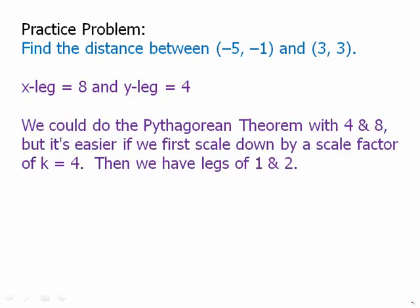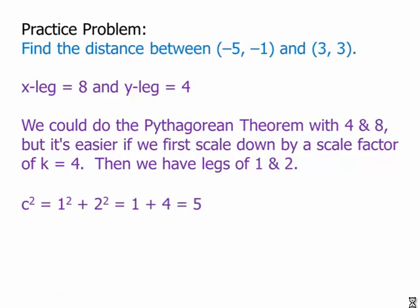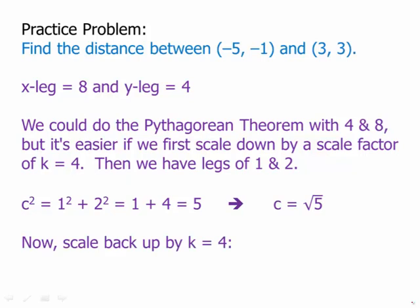We could do the Pythagorean theorem with legs of 4 and 8, but it's easier if we scale down first by the greatest common factor, a scale factor of 4. We scale down to a much smaller triangle with legs of 1 and 2. If we have legs of 1 and 2, we square those. We get c squared equals 5, c equals the square root of 5. Now we'll scale back up by a scale factor of 4. And we get a hypotenuse on the larger slope triangle of 4 root 5. And that's the distance between those two points. So notice that we could use proportional thinking to really simplify that calculation.